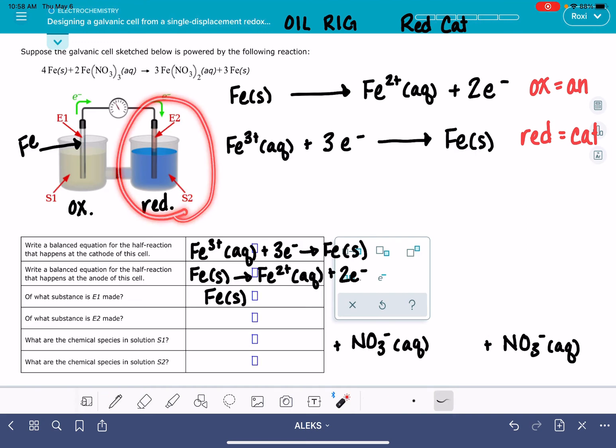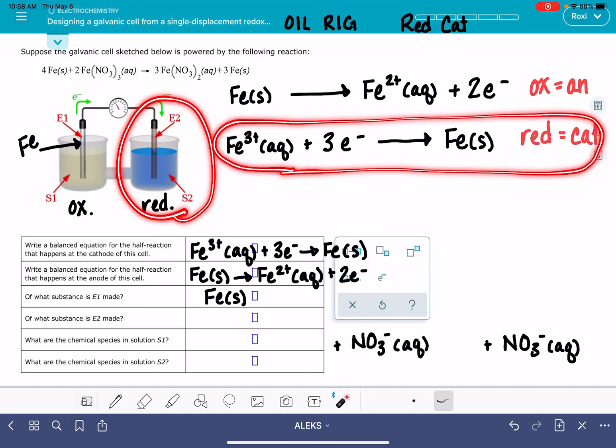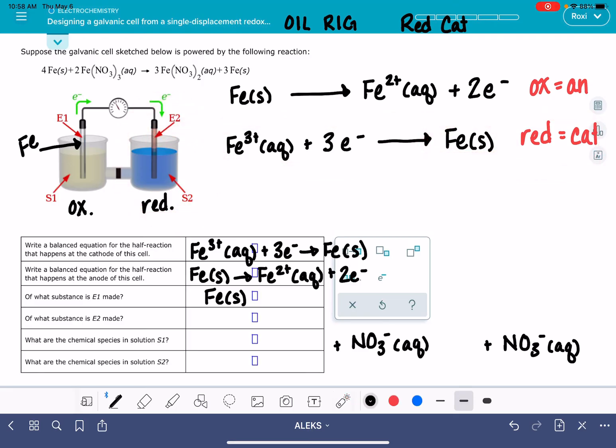For the blue side, the right side, this is the reaction that's taking place. And again, the electrode is always made up of the solid substance. Whether it's a reactant or product, that doesn't matter. It's always going to be the solid. So E2 is also made of iron, and that's pretty unusual. Normally, they're different substances, but that's what's going on here. Now, in terms of what's in each one of these solutions, that's the last thing that Alex wants us to ask.